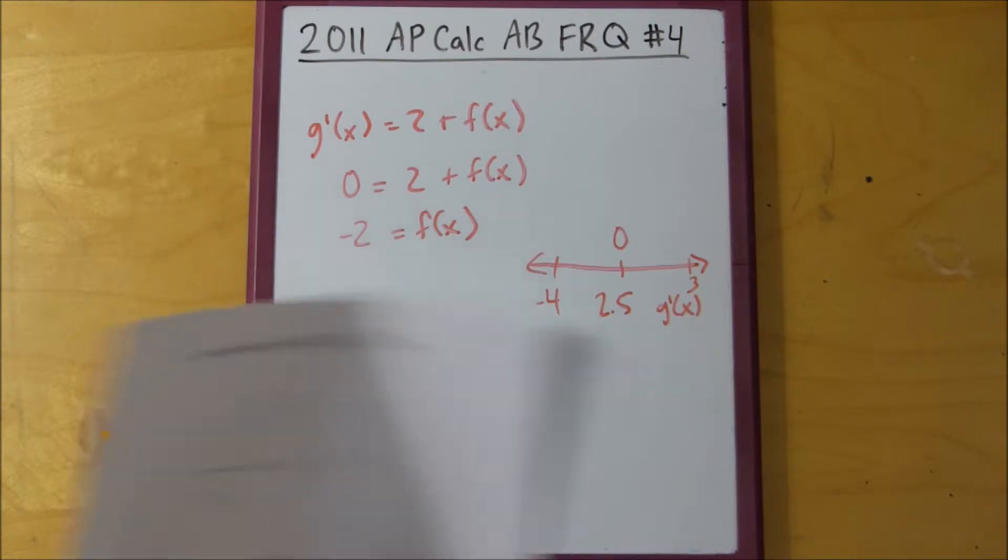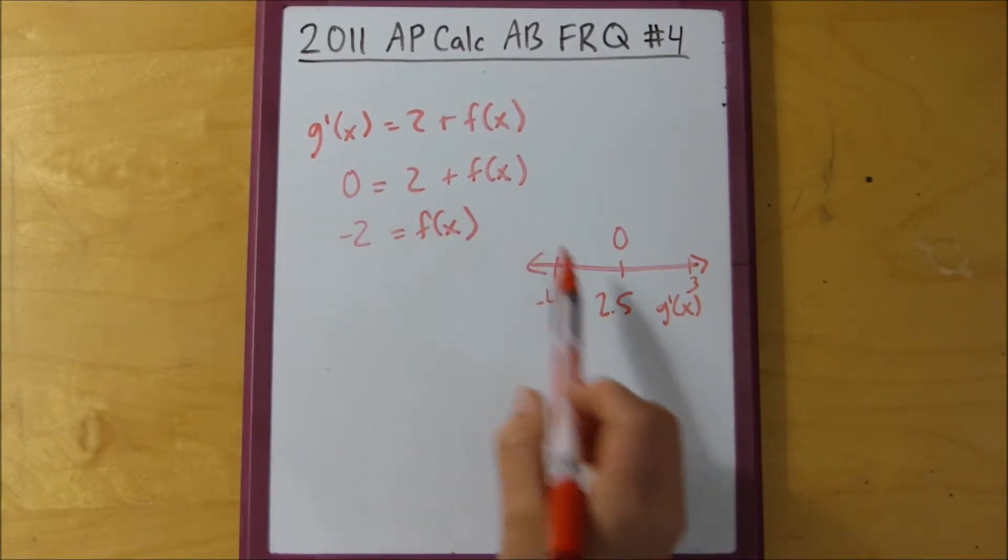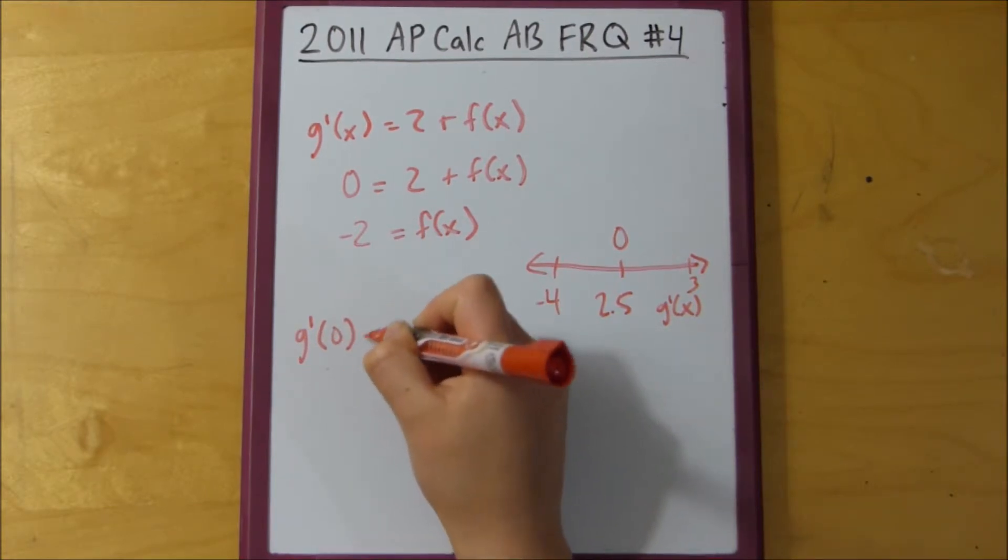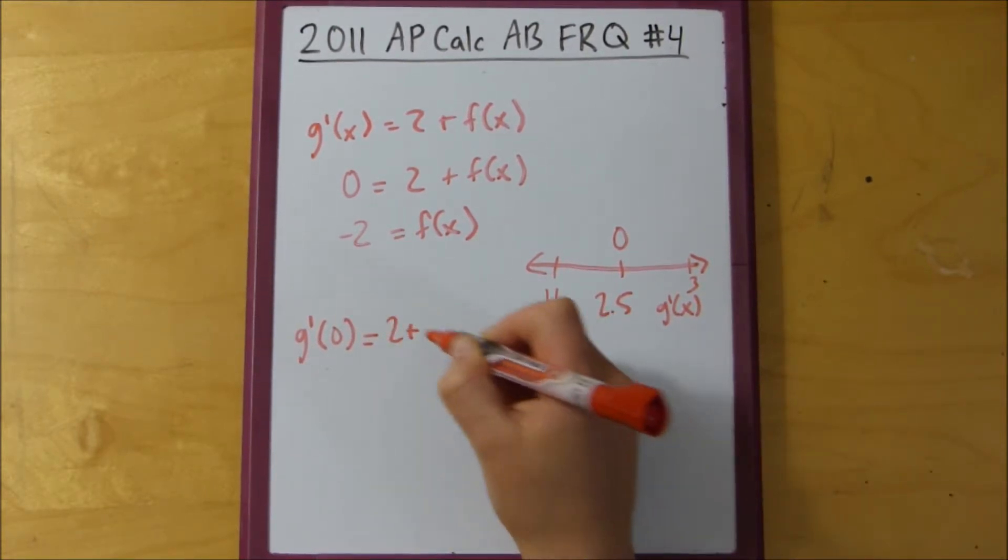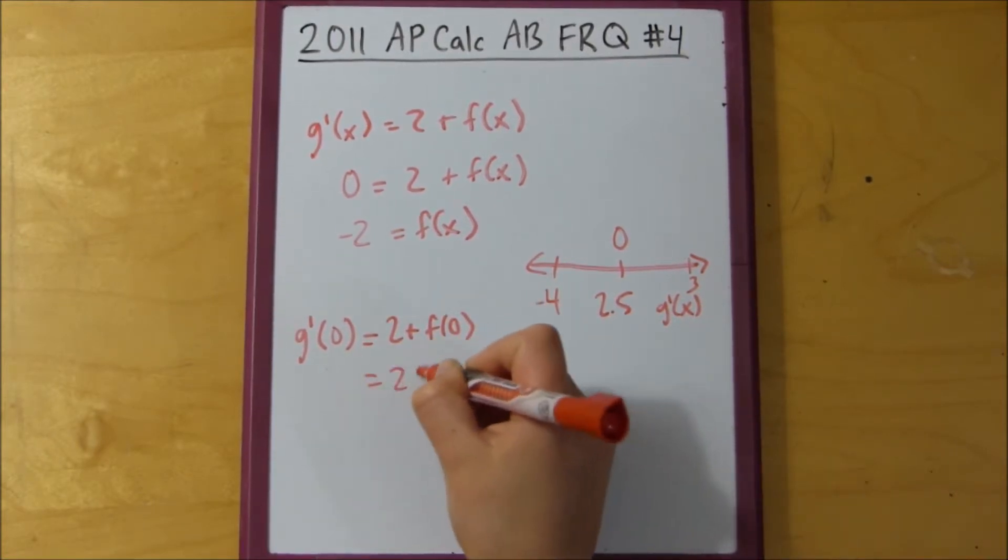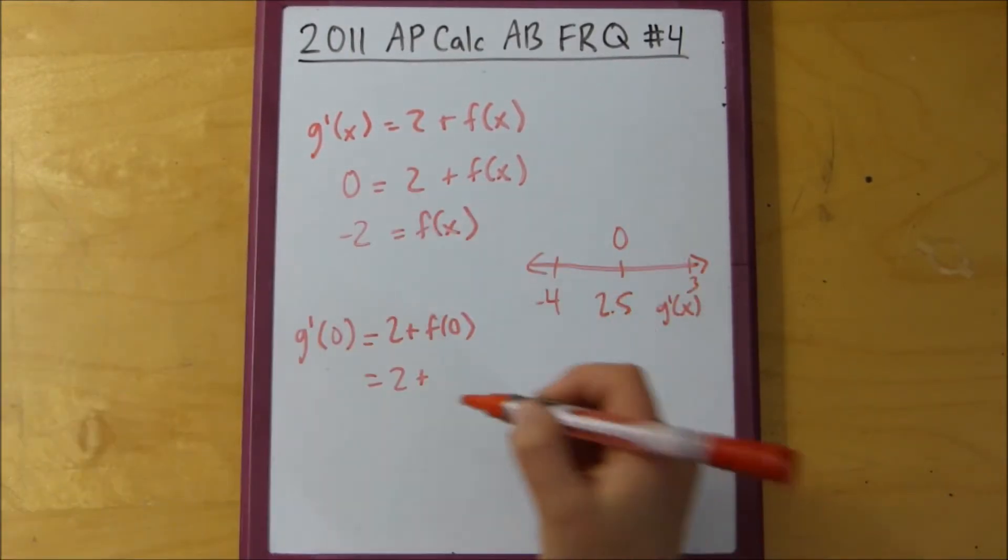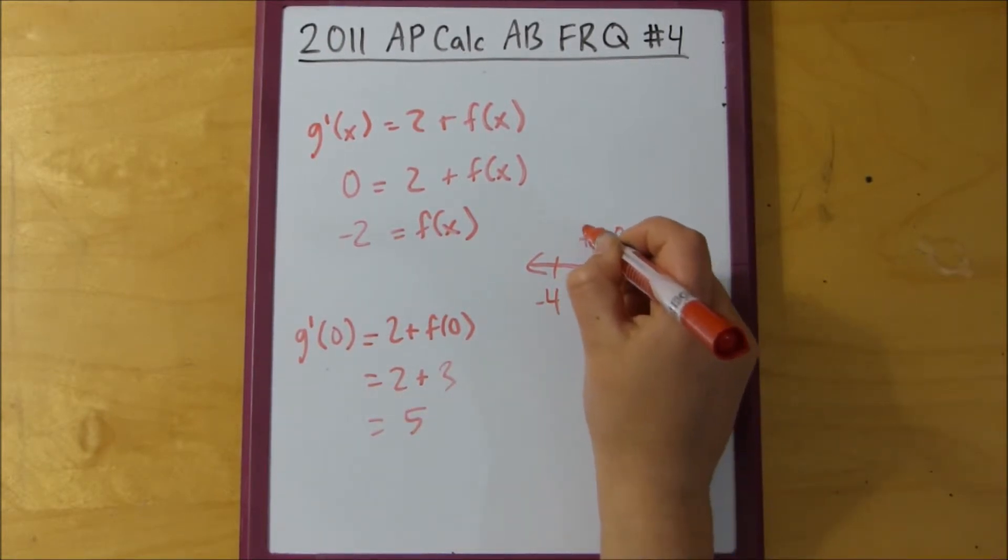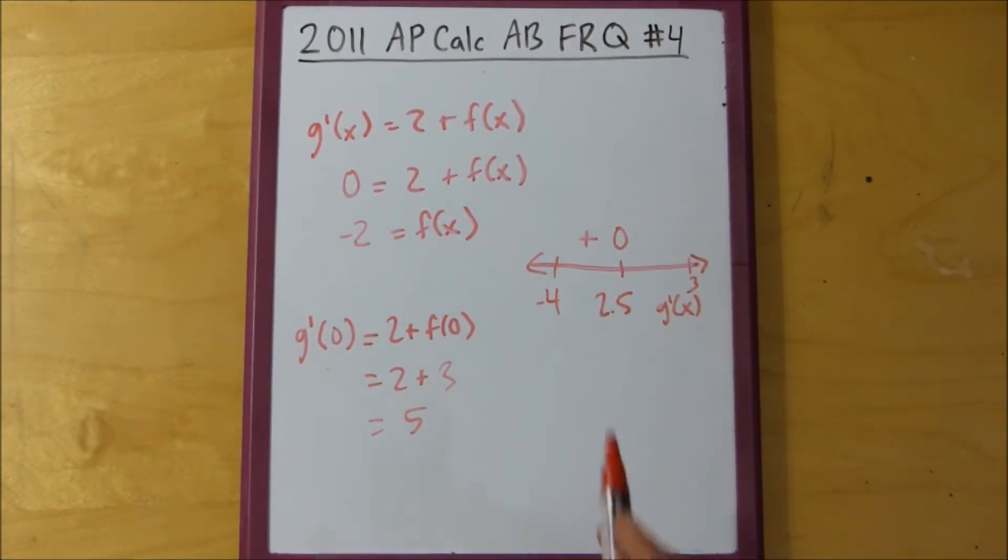So, we could plug in any number between negative 4 and 2.5. So, g prime of, let's say, 0. Yeah, 0 sounds like a good number. 2 plus f of 0, which would be 3. So, this is 5, so that means this is positive. And then, we plug in any number between 2 and a half and 3.